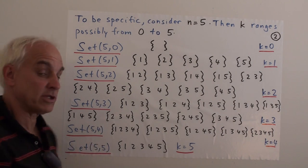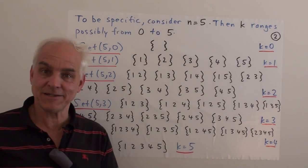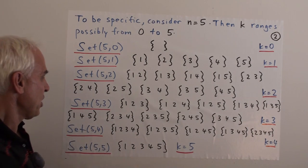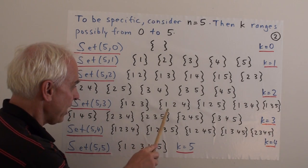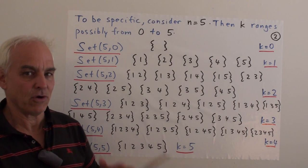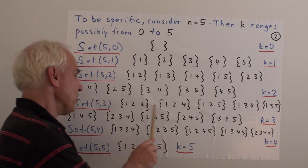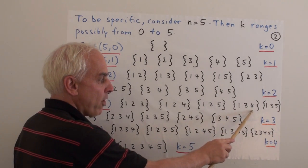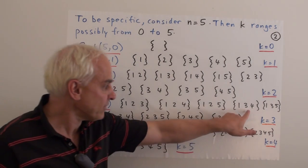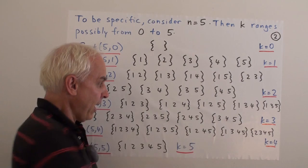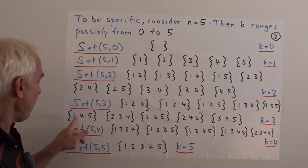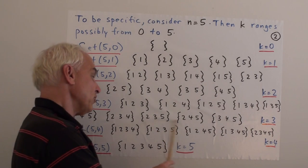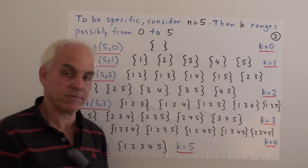When k equals three, we're talking about triples of numbers from one through five. Proceeding in odometer fashion: {1,2,3}, {1,2,4}, {1,2,5}, then rolling over to {1,3,4}, {1,3,5}, {1,4,5}, then {2,3,4}, {2,3,5}, {2,4,5}, and {3,4,5}.